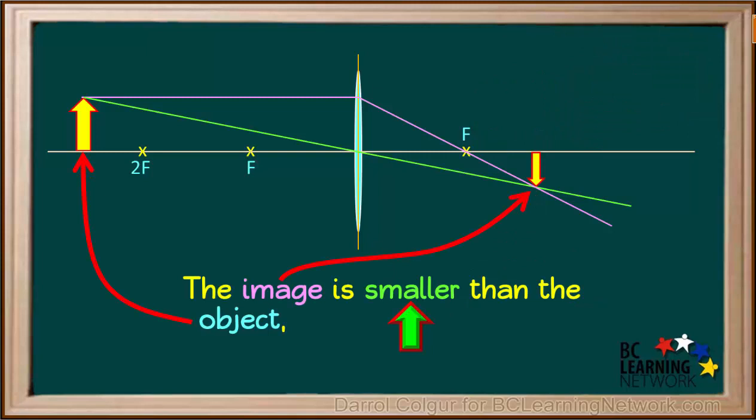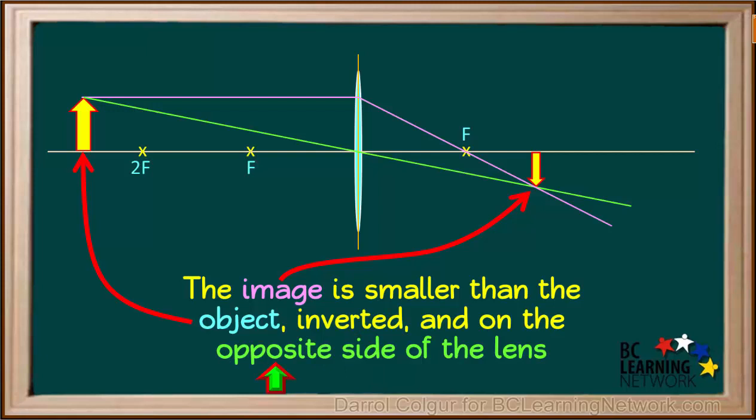So to review, we see that when the object is outside the 2F point, the image is smaller than the object, inverted, and on the opposite side of the lens to the object.